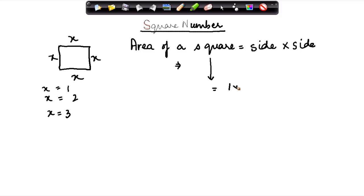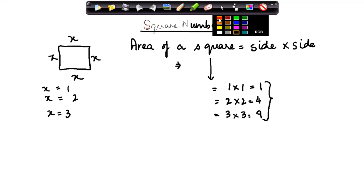So 1 times 1 is equal to 1. Here it will be 2 times 2 is equal to 4. Again, in this example, 3 times 3 is equal to 9. Now all these numbers, which come when we multiply one number with itself, these are called the square numbers.